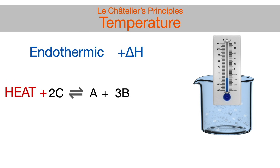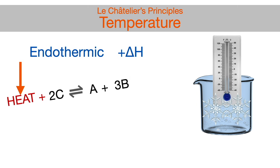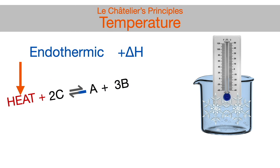The trick is to consider heat or energy a reactant for endothermic reactions. And just like with concentrations of reactants, per Le Chatelier's principles, if reactant concentration decreases, the reaction will shift left toward reactants. It's the same if heat continues to decrease or if the temperature of the environment is decreased — the reaction will shift to the left toward reactants, meaning the reverse reaction will be favored and occur.